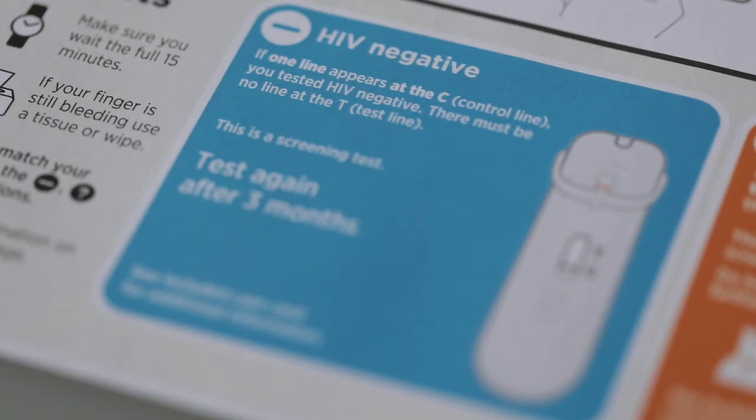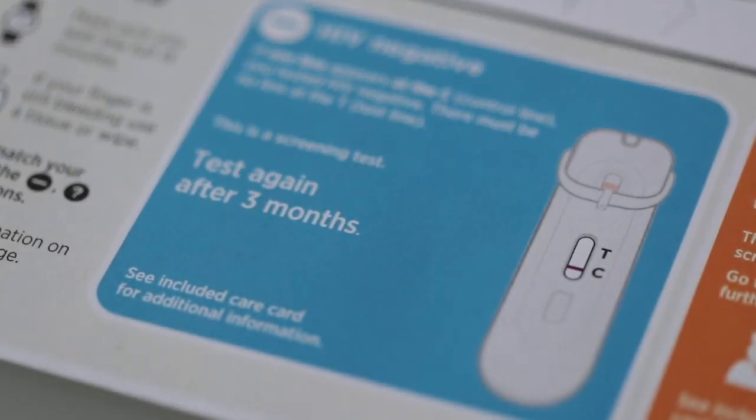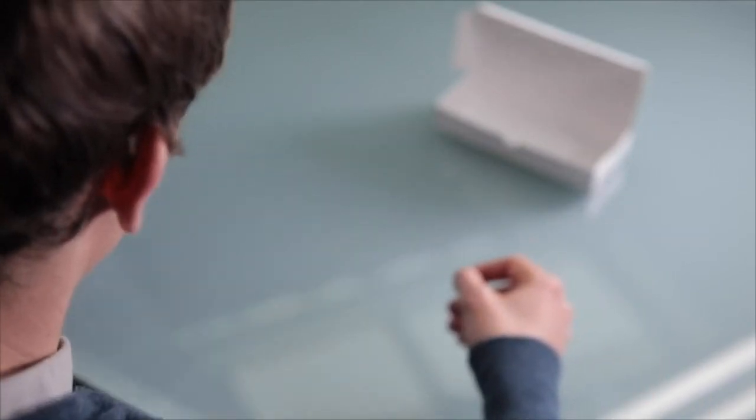Look in the blue box called HIV negative. If a line appears next to the C but no line appears next to the T, you have tested HIV negative. You should test again in three months' time. More information about HIV can be found on the back of the instructions.